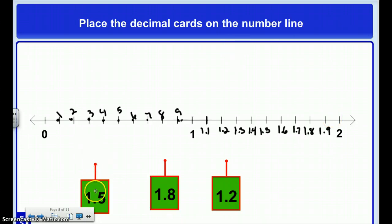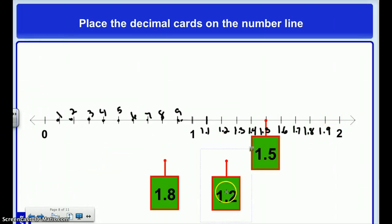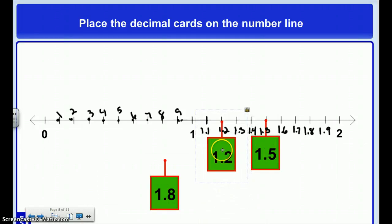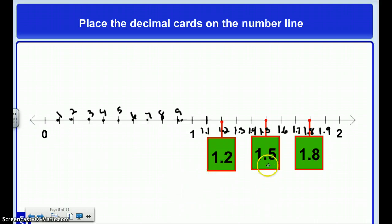So now I'm going to put my one whole 5 tenths on here, my one whole 2 tenths, and my one whole and 8 tenths — also written as one whole and 20 hundredths, one whole and 50 hundredths, or one whole and 80 hundredths.